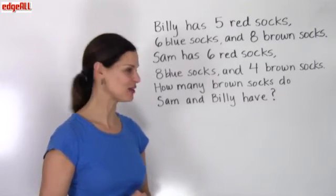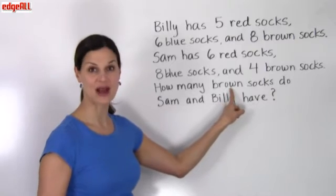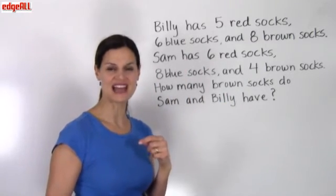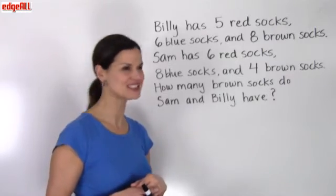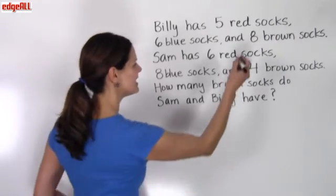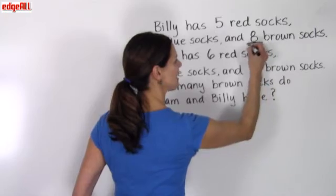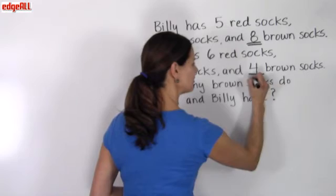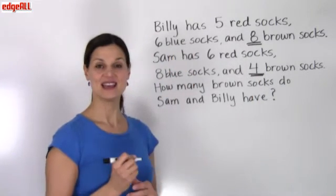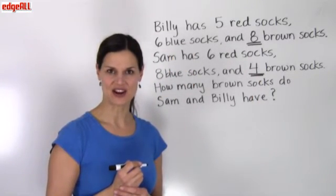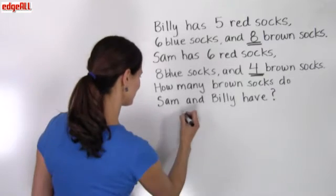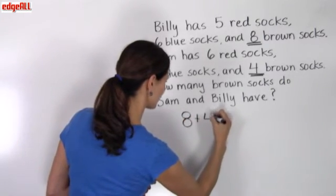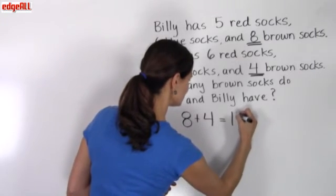So we want to make sure that we look just at the brown socks. Let's go back up to our problem and underline the amount of brown socks that Billy has. He has 8 brown socks. Sam has 4 brown socks. So we need to add together 8 plus 4. So 8 plus 4 equals 12.